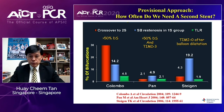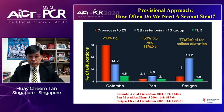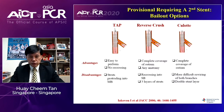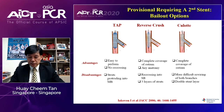How often do we need a second stent in the provisional strategy? It depends on the series. In the Colombo series, up to 30% have crossover to side branch stenting, but the majority of other studies show less than five percent need side branch stenting in the provisional approach. Even if a second stent is needed for the side branch, many techniques are available such as TAP, reverse crush, and Culotte, each with their own advantages and disadvantages.